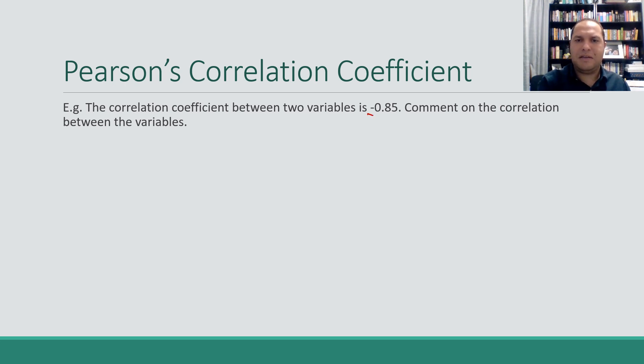So negative correlation, 0.85, that's actually strong. So we could say we've got a strong negative correlation. What we can also say is because we're using a correlation coefficient, those can only be used for linear regressions. So we've got a strong negative linear correlation between those two variables.